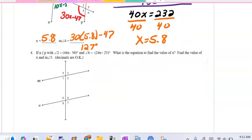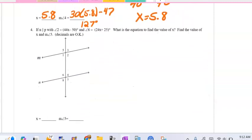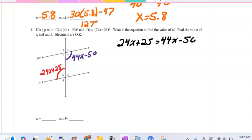The last class example we did was problem number 4. Again, the first step is to label. So angle 2 is 44x, take away 50. Angle 6, these are alternate interior angles, and we learned that alternate interior angles are congruent. So the equation would be 24x plus 25 is equal to 44x minus 50.